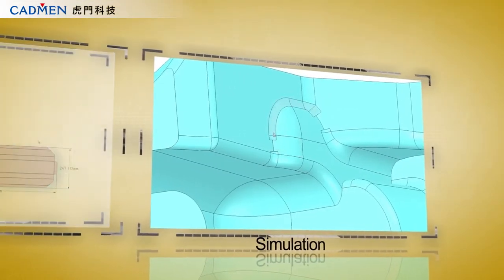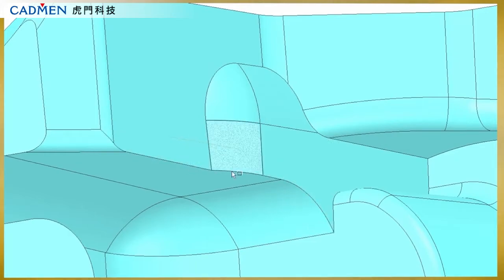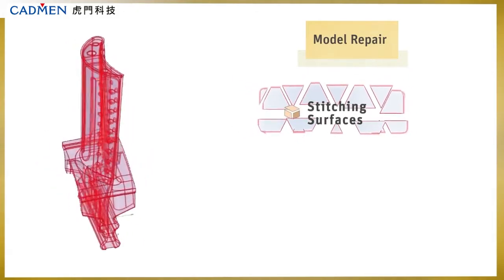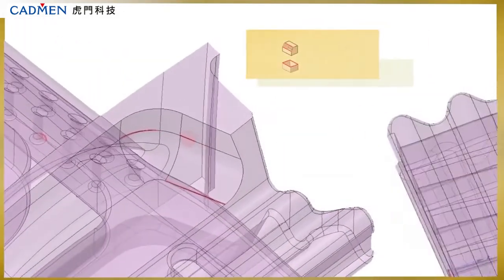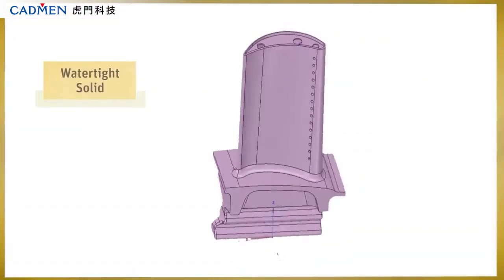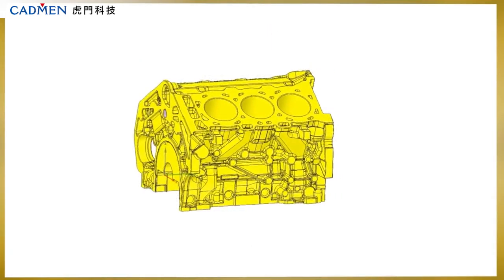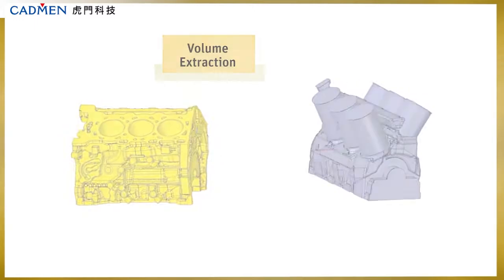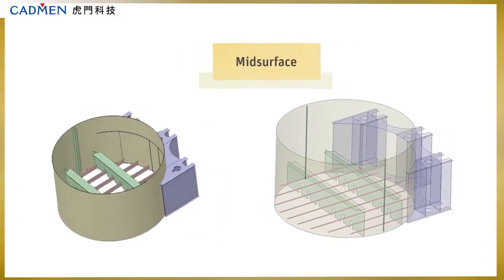You'll find huge efficiency gains when using SpaceClaim for analysis or simulation. The repairing of models is necessary for both manufacturing and simulation, with the end goal of watertight solids. SpaceClaim's automated tools effortlessly search for problems and provide instant solutions. You'll love the dedicated tools for creating complex geometry, such as volume extractions, volume enclosures, beams, and shell bodies.